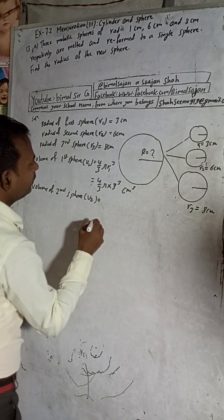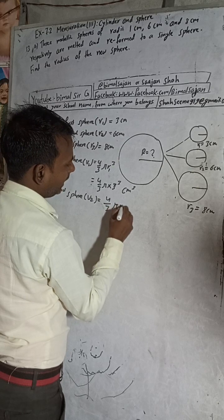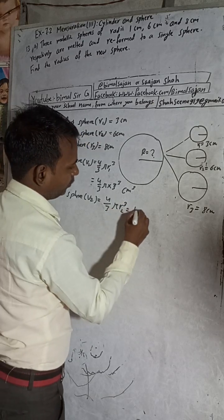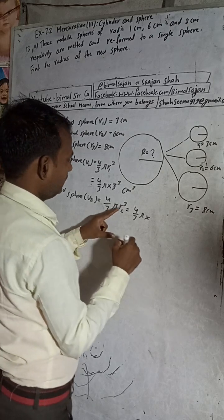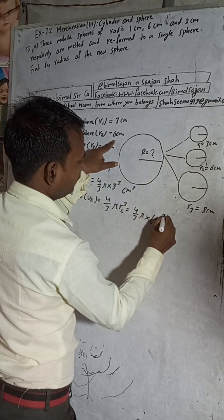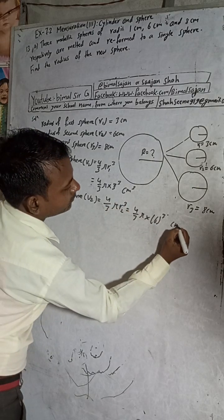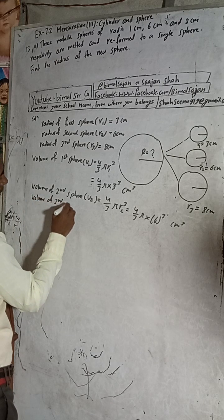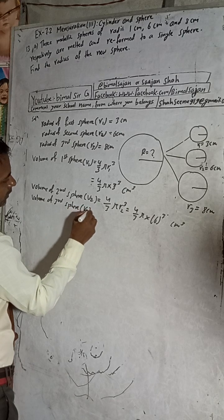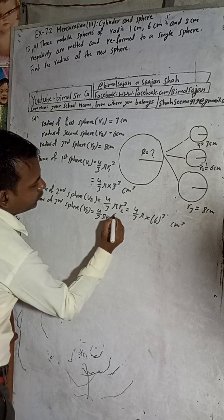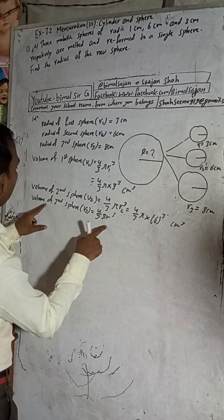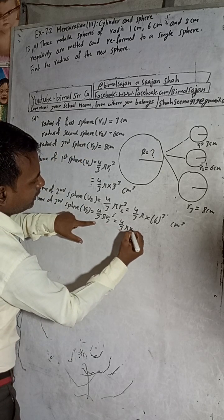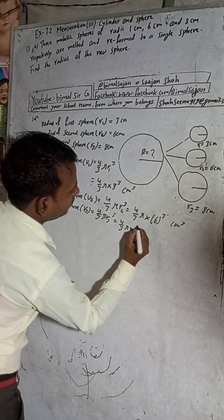Volume of second sphere V2 is again four by three pi r2 cubed. The radius r2 is 6 cm, so V2 equals four by three pi into 6 cubed, in cm cubed. Volume of third sphere V3 is equal to four by three pi into r3 cubed, where r3 = 8 cm, so V3 equals four by three pi into 8 cubed.